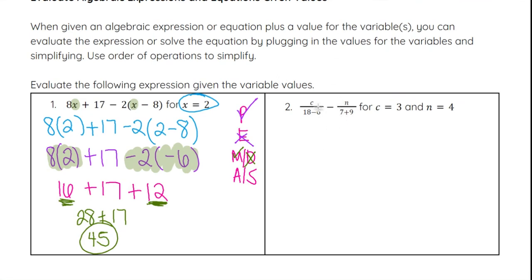Now on number 2, we're going to look at a different expression. We have C over (18 minus 6) minus N over (7 plus 9). They tell us that C is 3 and N is equal to 4, so we're going to plug in 3 for C and 4 for N. Now, 18 minus 6, if we look at that part following order of operations, is essentially like being in a set of parentheses because it is in the denominator of the fraction.